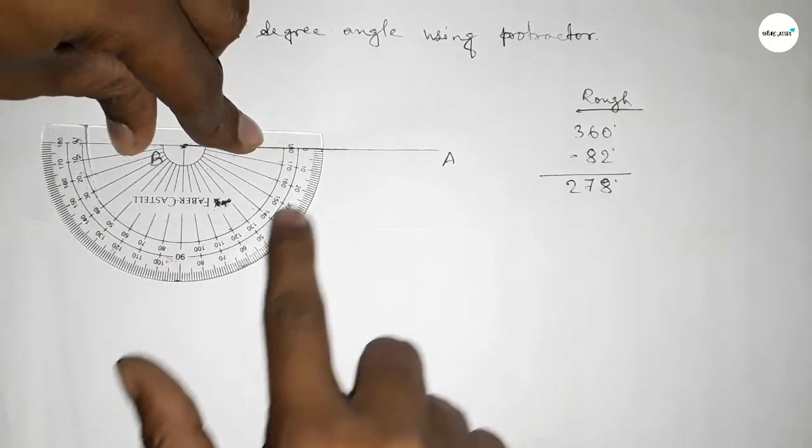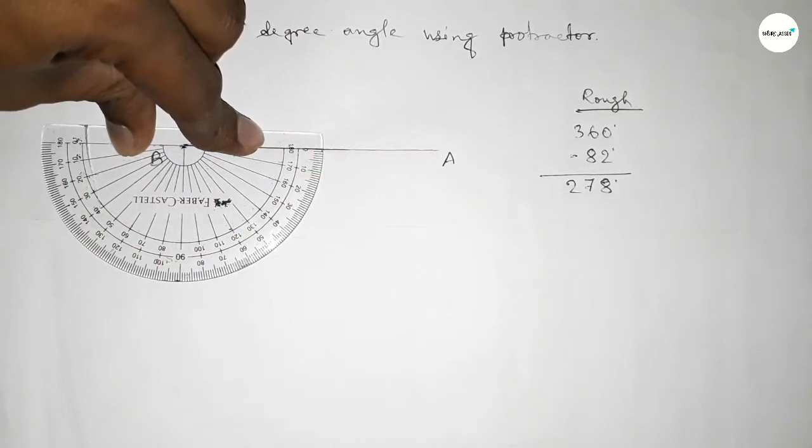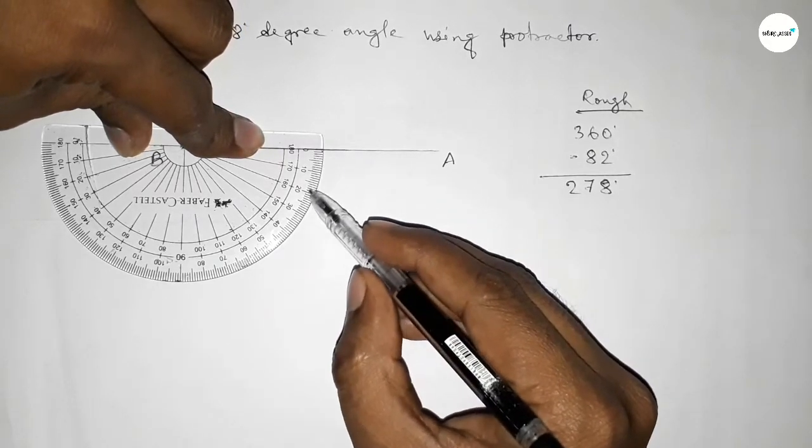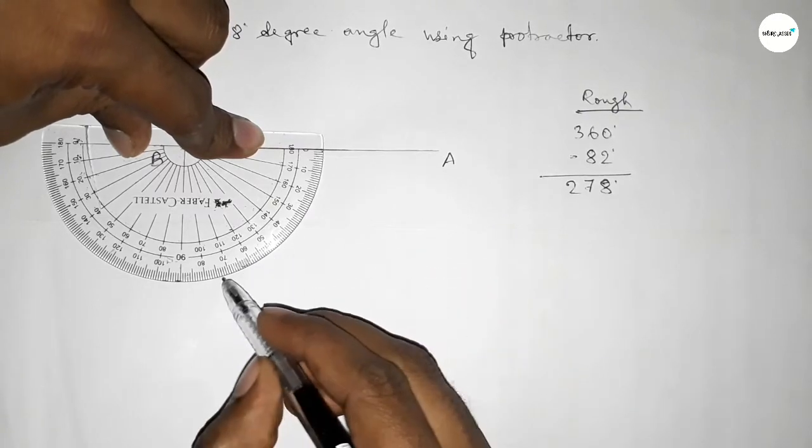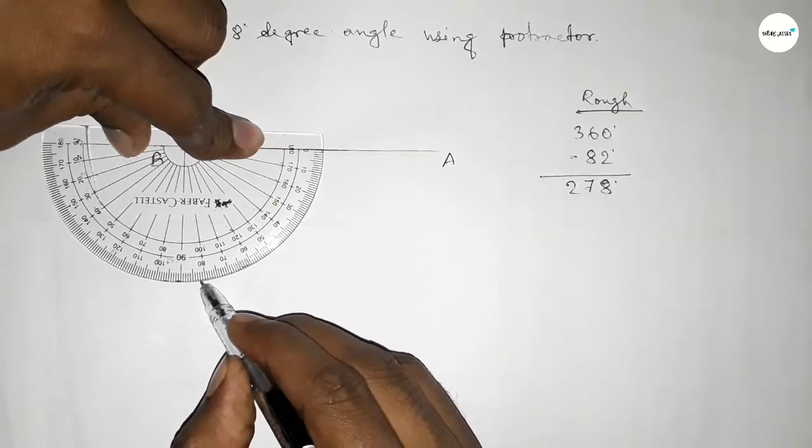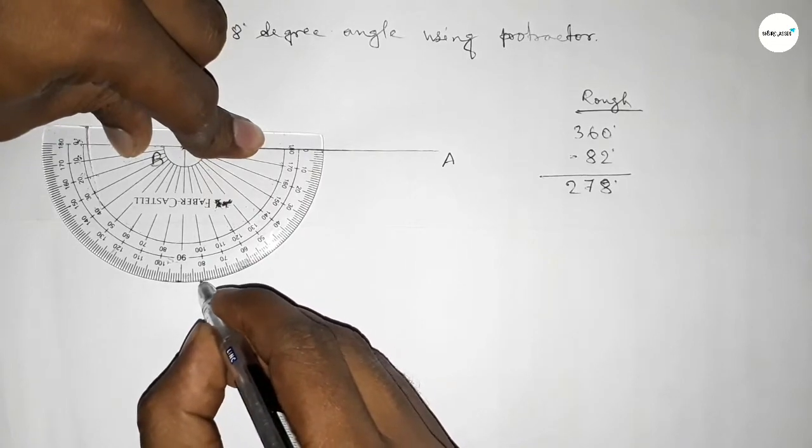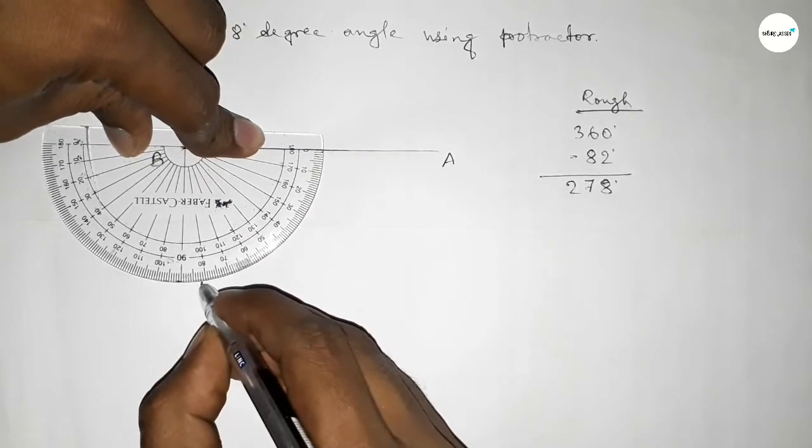and counting total angle, so total 360 degree angle. Now counting 82 degree angle, so from this is 0, 10, 20, 30, 40, 50, 60, 70, 80, and this is 81, 82. So if we subtract 82 degree angle from